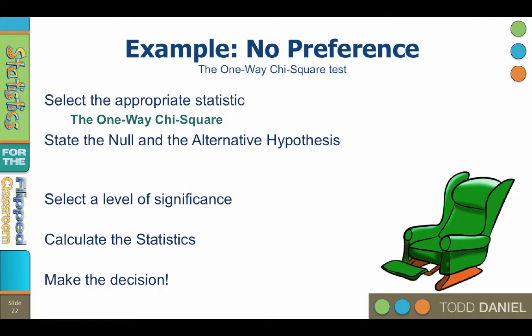Step two: State the null and the alternative hypotheses. In this case, our obtained values are being compared to an assumption that there is no preference in the population. If the chairs are chosen randomly, then all chairs should be chosen equally often. The null hypothesis is H sub zero: Chairs are chosen randomly. And the alternative hypothesis is H sub one: Chairs are not chosen randomly.